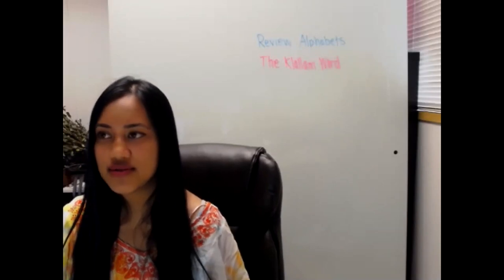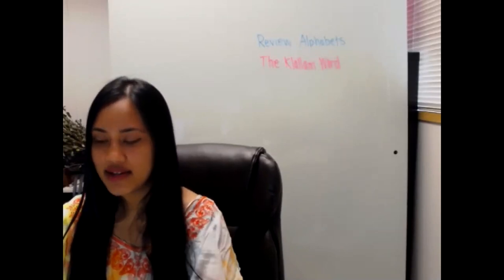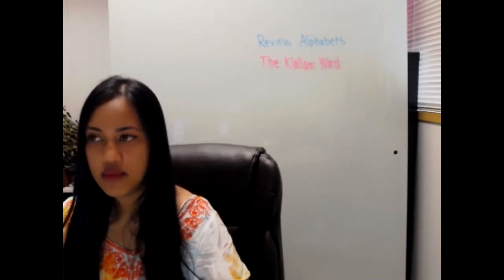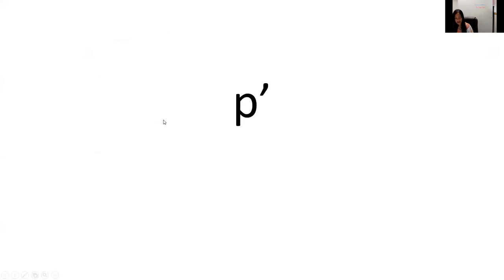Hey Squatchy, today we're going to review the alphabet and the column word. P is the same sound at the beginning and end of the word 'pop.' The next one will be our ejective P — pop that out a little bit.